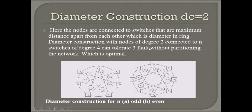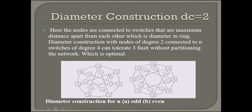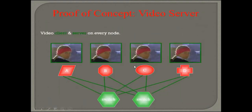I just showed you what the problem was, and this is an example of how we can tolerate three faults without partitioning the network, which is optimal. There are various solutions like this. Let us see the proof of the concept.